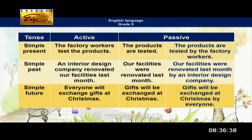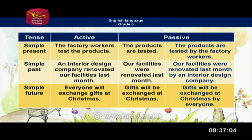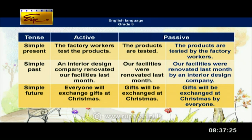Simple past tense: 'An interior design company renovated our facilities last month.' Without the agent: 'Our facilities were renovated last month.' With the agent: 'Our facilities were renovated last month by an interior design company.' Simple future tense: 'Everyone will exchange gifts at Christmas.' Without the agent: 'Gifts will be exchanged at Christmas.' With the agent: 'Gifts will be exchanged at Christmas by everyone.'